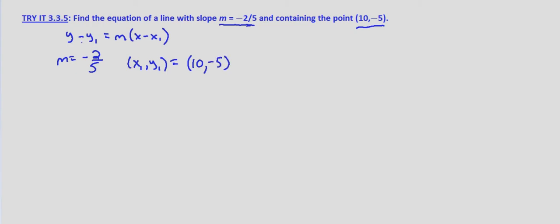Now it's just a matter of substituting these values into our point-slope form. So y minus y1 is negative 5, equals m, which we're given as negative two-fifths, times x minus our x1 is 10.